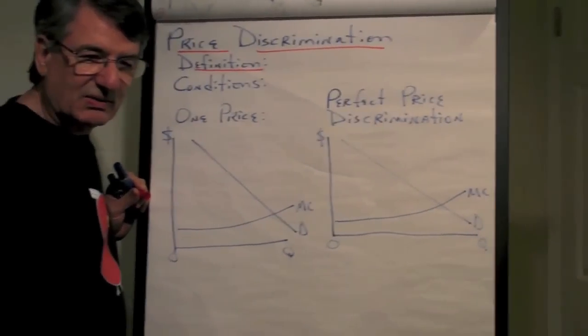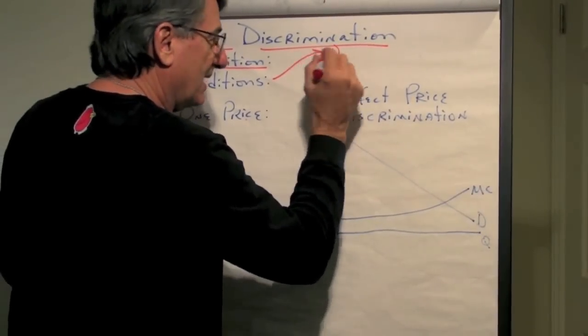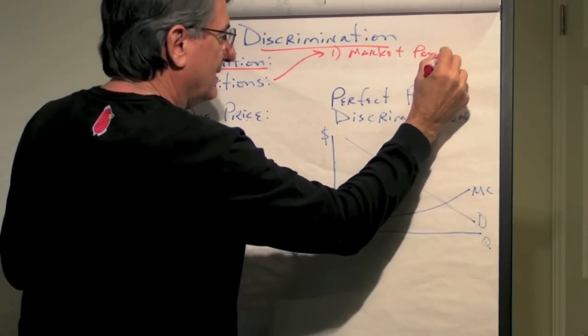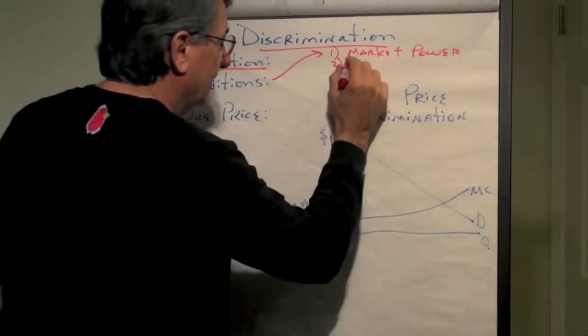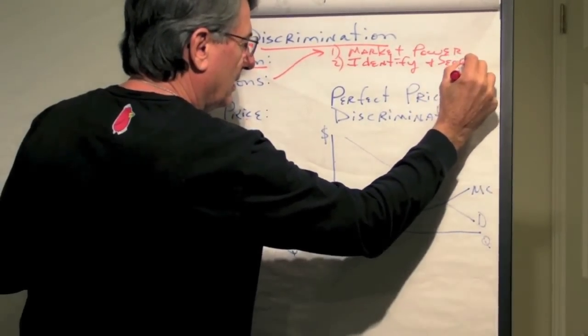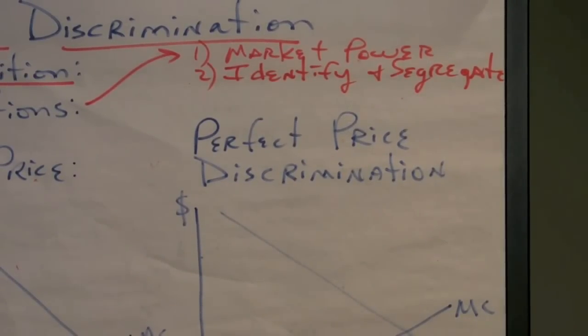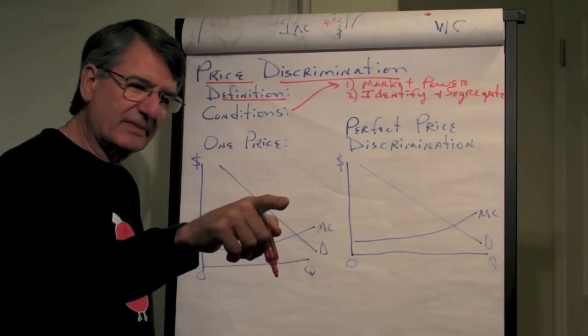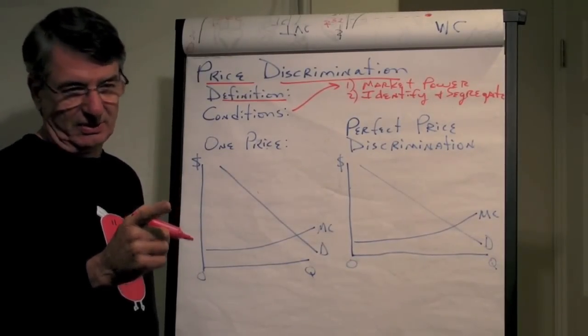Now, not just anybody can price discriminate. There are conditions necessary. One is, the firm, the seller, has to have some market power. They can't just be a price taker. Second is, they must identify and segregate different groups or different individuals according to their elasticity of demand. The people with the most inelastic demand will be charged the highest or the lowest price? It will be the highest. That's right. And the people whose demand is most elastic will be charged the lowest. The lowest. That's right.